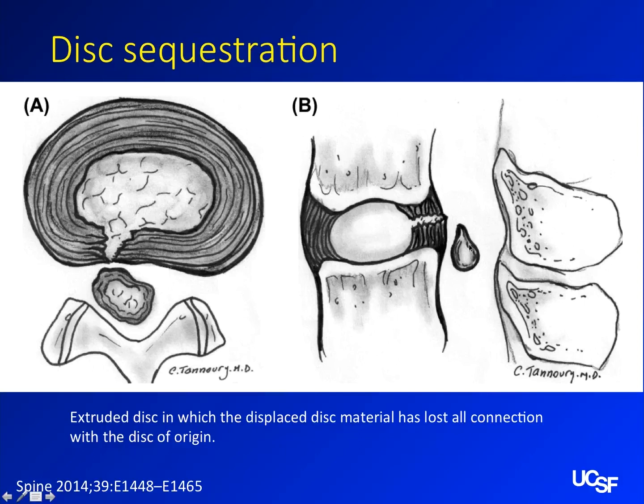Sequestration is basically an extrusion that's gone to the point where the little tether has broken, and you have disc material just hanging free. This is important to mention in your reports because if a surgeon goes in to do a microdiscectomy and takes out the bulge but leaves a sequestered fragment, that's a huge problem. Many times the fragment will have migrated — below the disc or above the disc. When you have sequestration, you should mention it and note where the fragment has migrated.